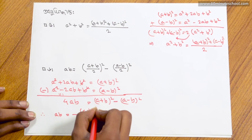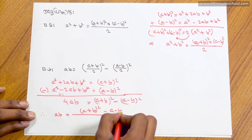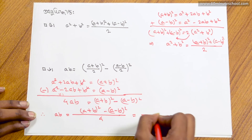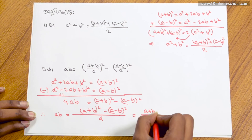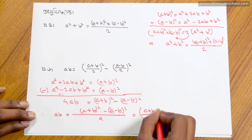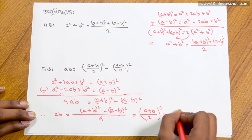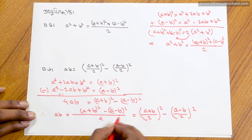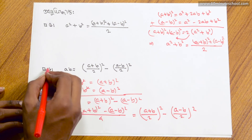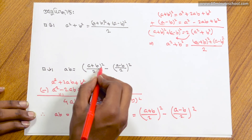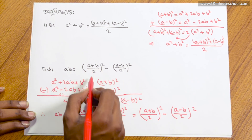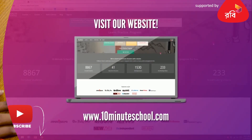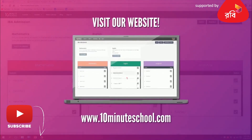(a plus b) whole square minus (a minus b) whole square divided by 4. If we take (a plus b) by 2 whole square minus (a minus b) by 2 whole square, we get the identity. Therefore, using this principle, (a plus b) whole square divided by 2: (a plus b) by 2 whole square minus (a minus b) by 2 whole square.